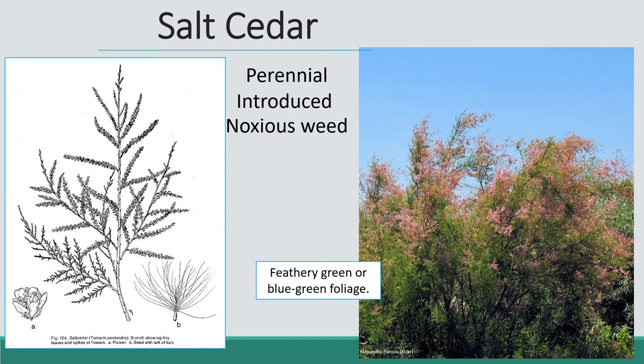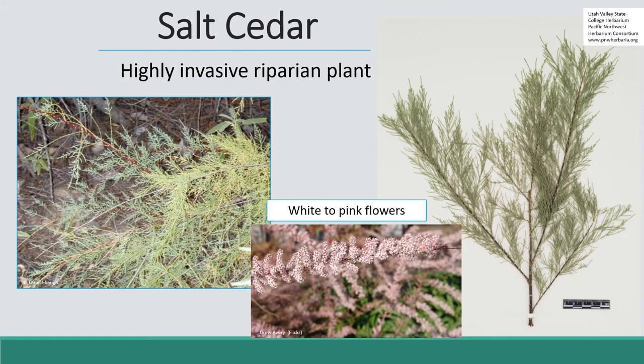It has a really feathery leaf that is kind of blue-green foliage. From a distance you can't really see the leaves — they're just these little feathery scales — which is why it gets the name salt cedar, because if you take a close look at the leaf it looks like a juniper or cedar tree. It has red stems and white-pink flowers. On the left you can see a little bit of salt shininess on those stems and leaves.